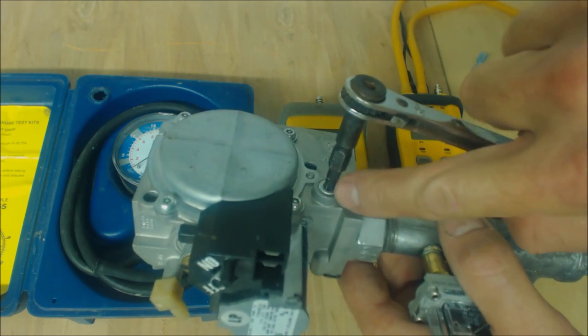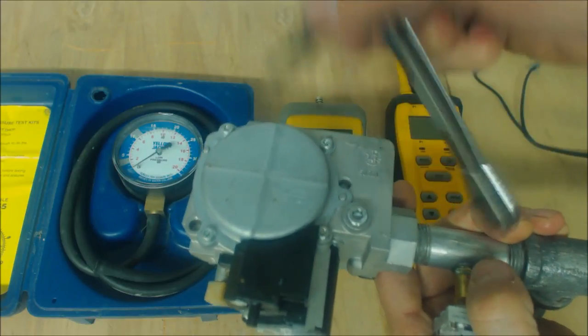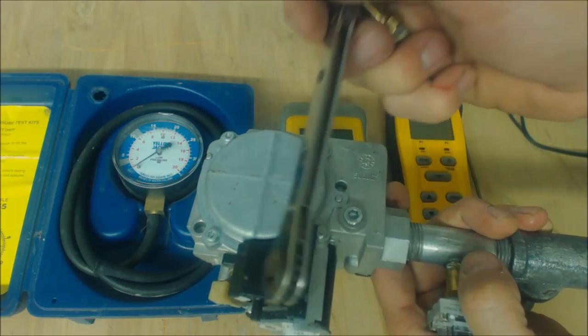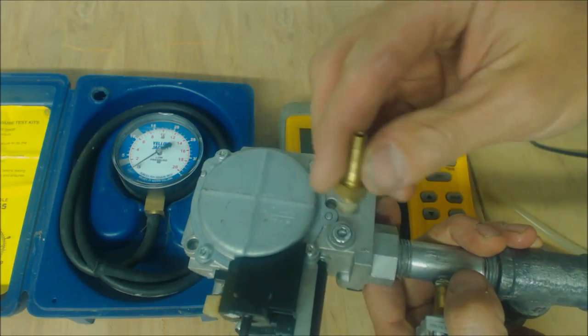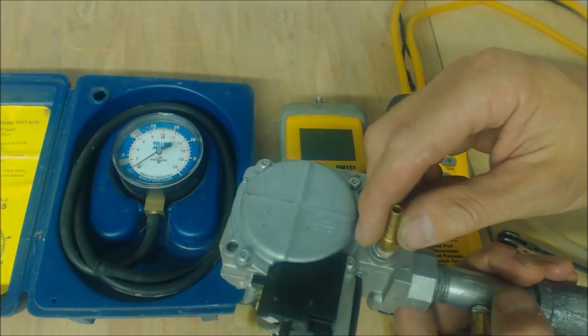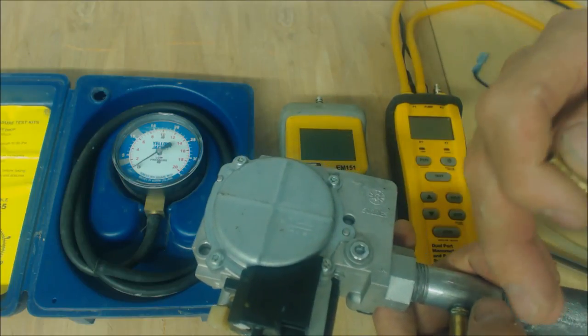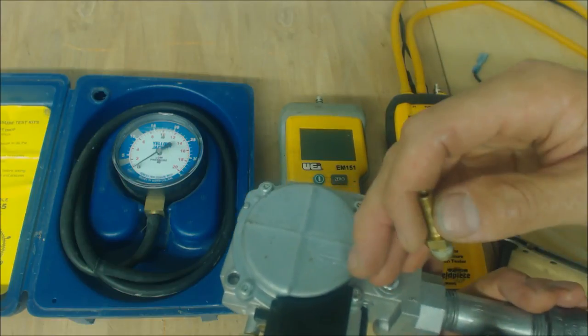For a gas valve, we can check the inlet pressure with this screw that we undo with a service wrench. We turn the gas off, turn the furnace off, take that out, put our brass fitting in, and hook up our manometer to check the pressure. Then we turn the gas valve back on, turn the furnace on, and check our inlet gas pressure.